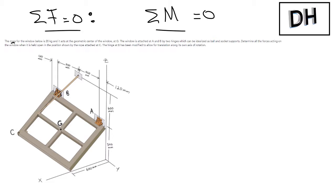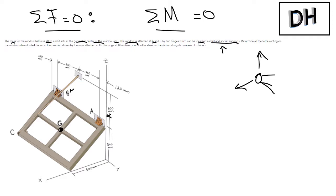In this problem, we have a massive window which is 20 kilograms. The weight acts at the geometric center of the window at point G. The window is attached at A and B by two hinges, and these are idealized as ball-and-socket supports. This is tricky — they're telling us we will have no moment reactions. For a ball-and-socket support, we have a reaction in x, a reaction in z, and a reaction in y — three reactions only, and no moment reactions because it's allowed to rotate freely.